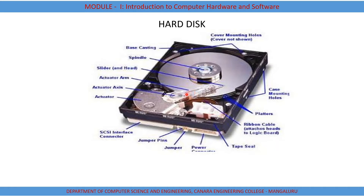Typically, a hard disk drive has two electric motors: one is a disk motor to spin the disk, and an activator motor to position the read-write head assembly across the spinning disk. We can see here the platters or disks stacked one above the other, and the activator arm. There are also jumper pins, which are used to set a hard disk as master or slave, and a power connector.